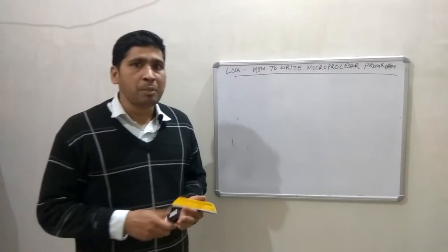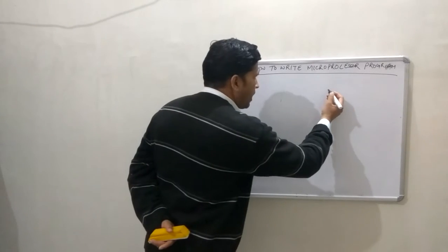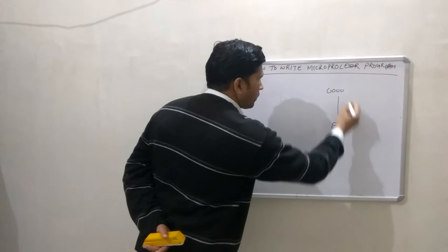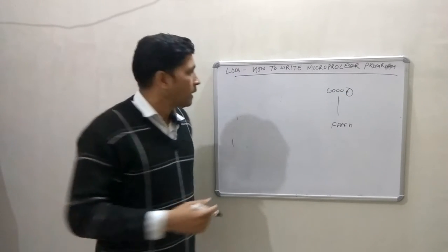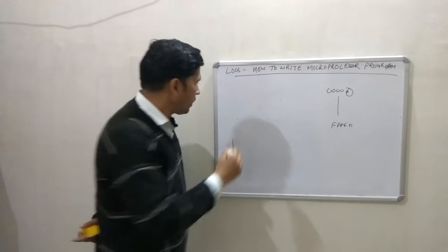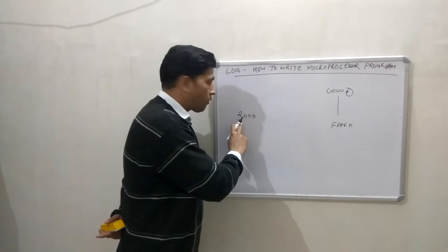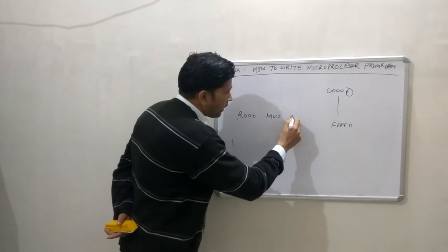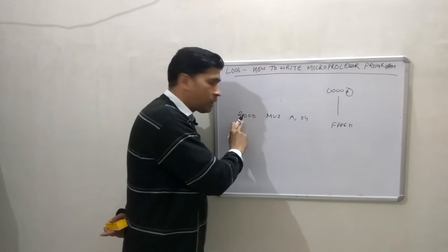Let's take a simple example of addition of two numbers, which we have already discussed in my previous lecture. The range of RAM address is 0000 to FFFFh. In the microprocessor kit you need not write H because by default it is considered as a hexadecimal number. Between these you can take any address. Suppose I am starting from 2000 — this is my RAM address from where I am going to start writing the microprocessor program.